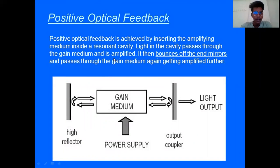Positive optical feedback is achieved by inserting the amplifying medium inside a resonant cavity. Light in the cavity passes through the gain medium and is amplified. It then bounces off the end mirrors and passes through the gain medium, again getting amplified further. In positive optical feedback, we have a gain medium. When the power supply is given, the electrons gain medium and reflect back and the light will output which is a laser.